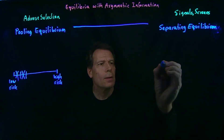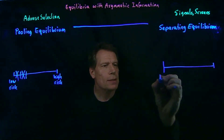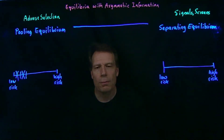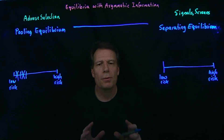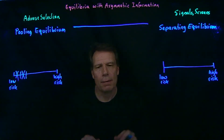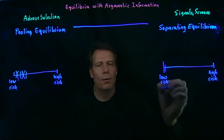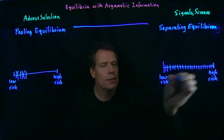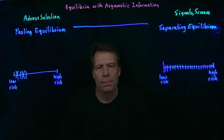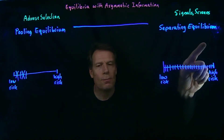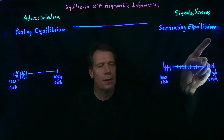Now what about a separating equilibrium? We can again line people up from low risk to high risk, but now all information has been revealed. The insurance company knows exactly where on this continuum you lie when you apply. So they can create separate prices for every different risk type — separate markets for the very low risk people, and so on. Lots of different markets emerge, each with a different price targeted at the risk type applying for insurance. The price for low-risk types is going to be really low, and it increases as your risk increases, with the highest-risk people having the highest premiums.